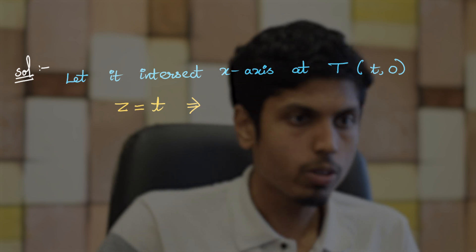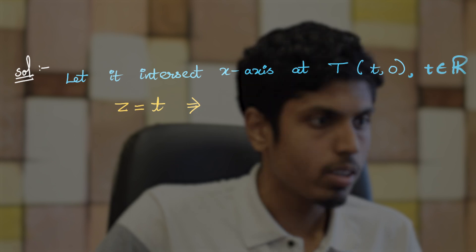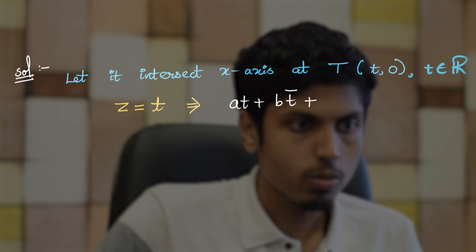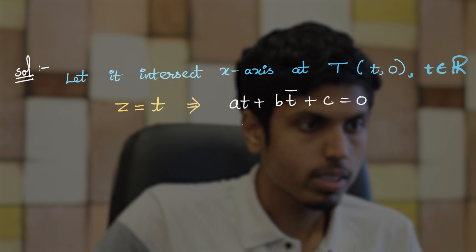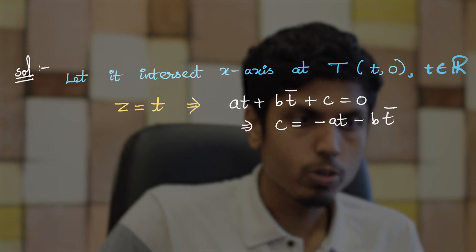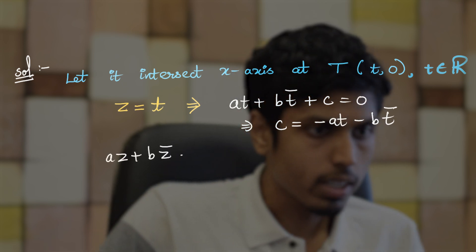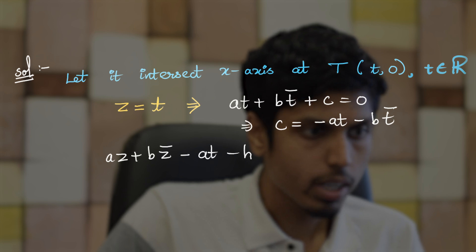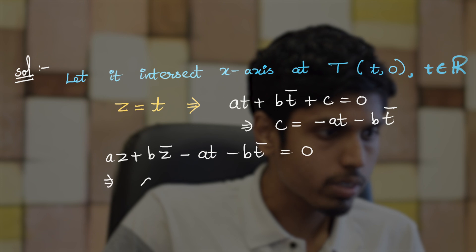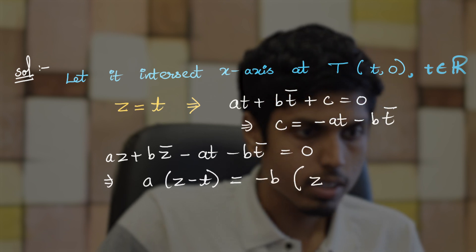If we substitute z = t, where t is a real number, we get at + bt̄ + c = 0, which implies c = −at − bt̄. Substituting this back into the original equation gives az + bz̄ − at − bt̄ = 0. Grouping like terms, we get a(z − t) = −b(z̄ − t̄), which is −b times the conjugate of (z − t).